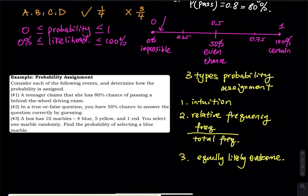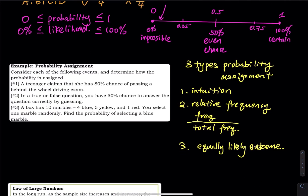Maybe using a multiple choice problem is not the best example for equally likely outcomes, so let's say I have an envelope with four cards labeled A, B, C, and D. I place these four cards inside the envelope and ask you to pick one. What is the probability that you will get an A? It's one over four. You don't know which card is which — you reach in and pick one. The probability of picking any card is one over four. That is equally likely outcomes.